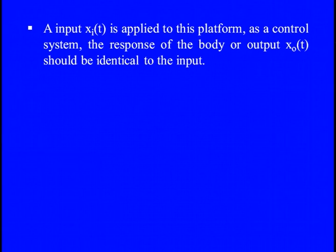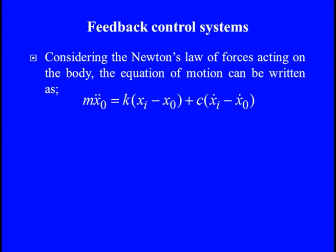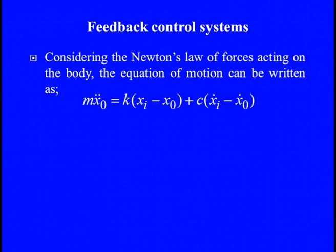Taking the basic spring-mass-damper system: the desired output is x₀ and the input is xᵢ. The mass moving with acceleration introduces inertia forces; we have restoring forces and damping forces. We need to control the platform under which all excitations are happening. The input xᵢ(t) is applied to the platform through which excitations are transmitted, and we want to control the response of the body — the mass x₀. Applying Newton's law, we frame the equation of motion: m·x̄₀ = k(xᵢ − x₀) + c(ẋᵢ − ẋ₀).